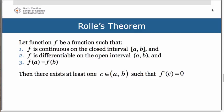That brings us to the statement of Rolle's theorem. Let f be a function such that: f is continuous on the closed interval [a, b], f is differentiable on the open interval (a, b), and now a third condition, that f(a) has to equal f(b). Then there exists at least one c value in the open interval (a, b) such that f'(c) is equal to 0.